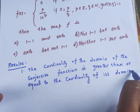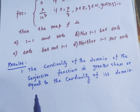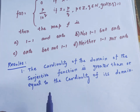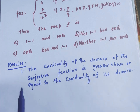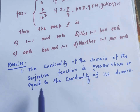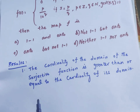Let us recall this result. Cardinality means the number of elements in the set. Surjective means onto, and injective means one-one. So injective is one-one and surjective is onto. We need to understand both one-one and onto definitions clearly.